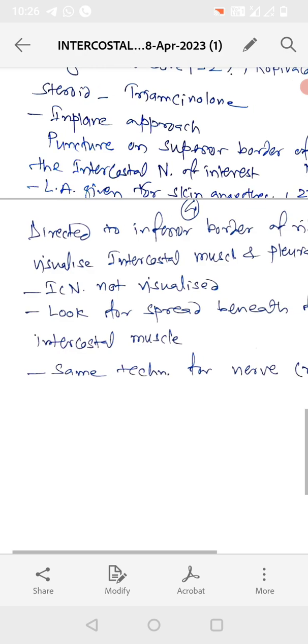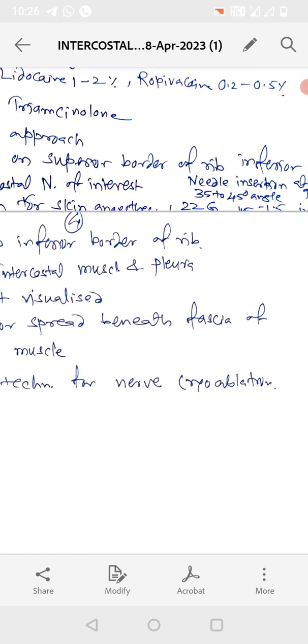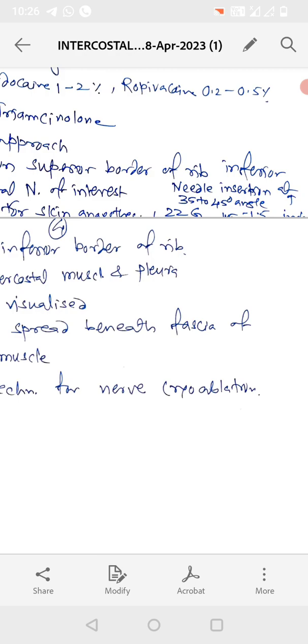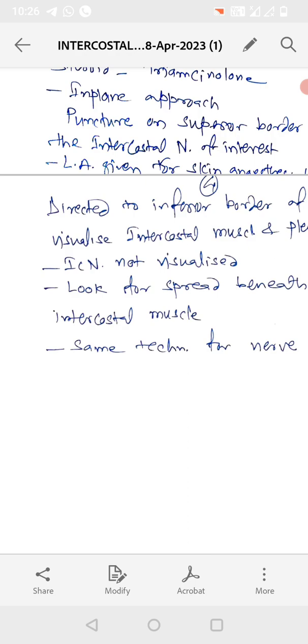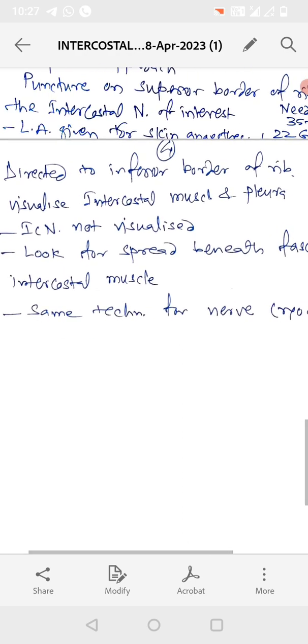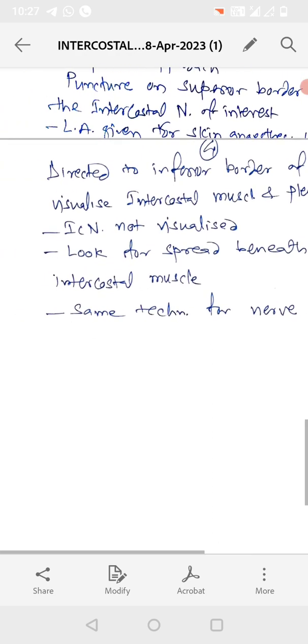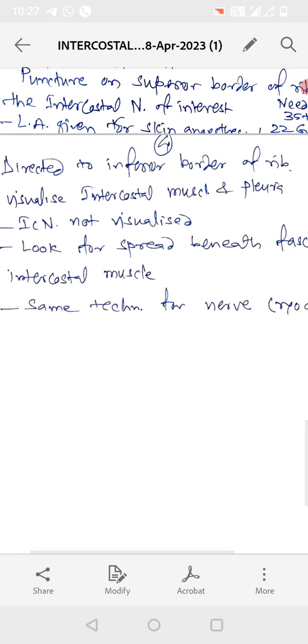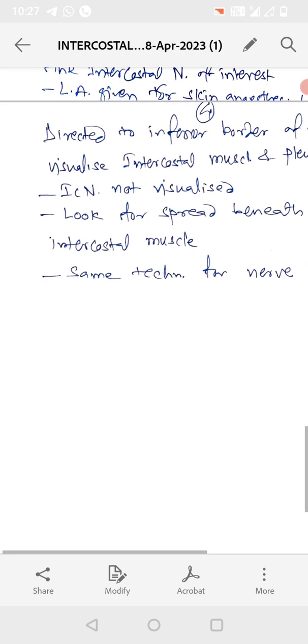Local anesthesia is given for skin anesthesia. Needle insertion is at 35 to 45 degree angle. Needle is directed to inferior border of the rib. Now visualize intercostal muscles and pleura.